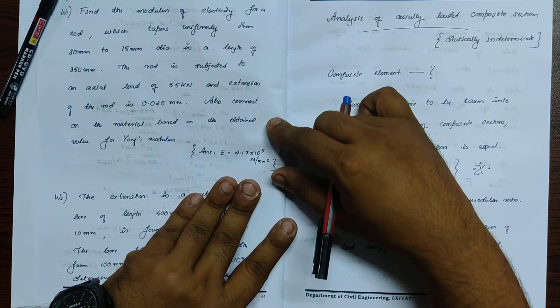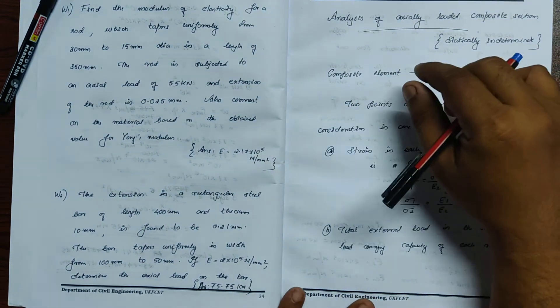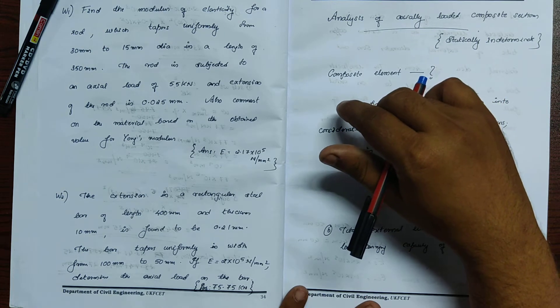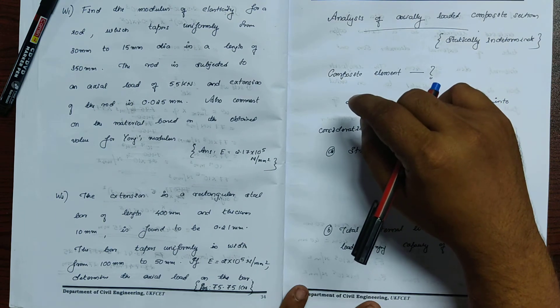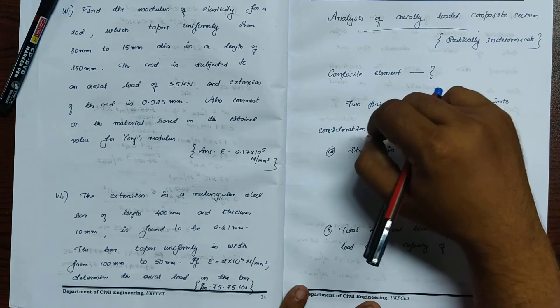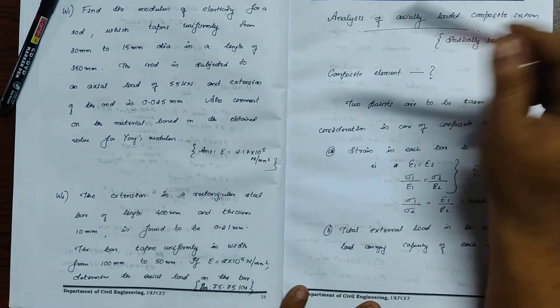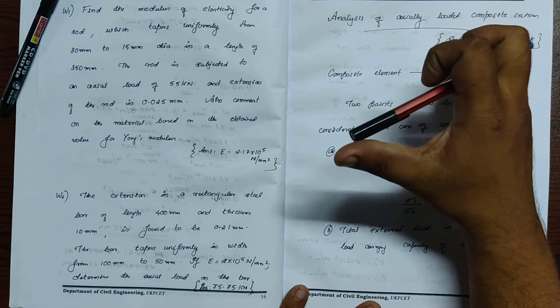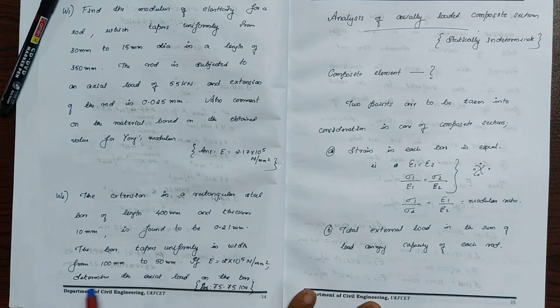Now another problem: Find the extension of a rectangular steel bar of length 400mm and thickness 10mm. Extension delta is found to be 0.21mm. The bar tapers uniformly in width from 100mm to 50mm.